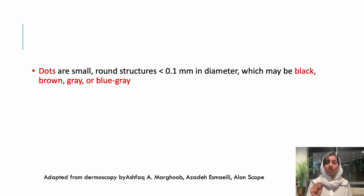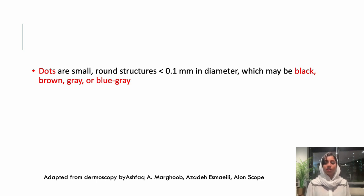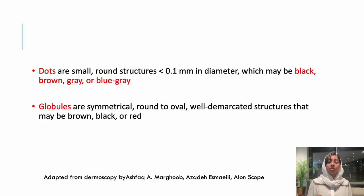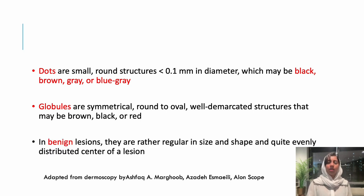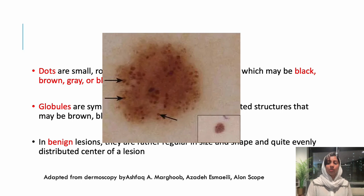Coming to other basic structures. First are dots: these are small round structures less than 0.1 millimeters in diameter. They can be black, brown, gray, or blue-gray depending on the melanin and its location. Globules are more symmetrical, round to oval structures that are well demarcated, and can be brown, black, or red — much larger in size than dots. In a benign lesion, dots and globules will be more regular in size and shape, evenly distributed, and mostly toward the center of the lesion.